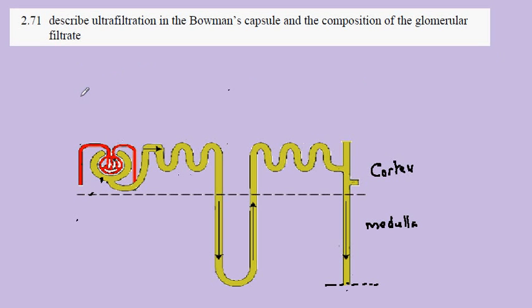My GCSE Biology syllabus statement 271, and here we're looking at what is known as ultrafiltration in the Bowman's capsule and the composition of glomerular filtrate.